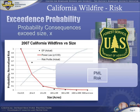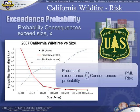I am using PML risk — probable maximum loss — as my metric of risk. PML risk is the product of exceedance probability times consequence. PML risk is computed by multiplying the vertical axis by the horizontal axis of this chart. Why are these forests high risk?